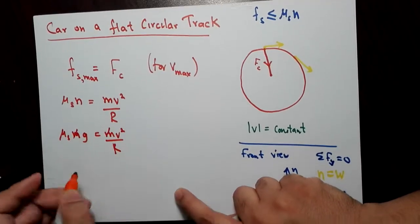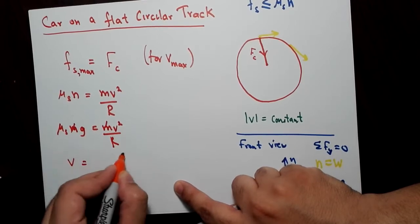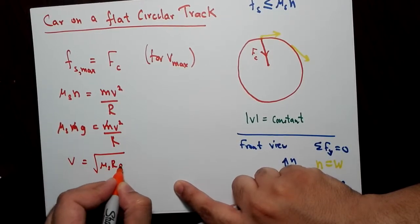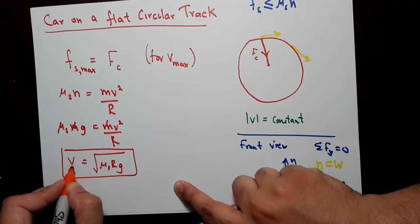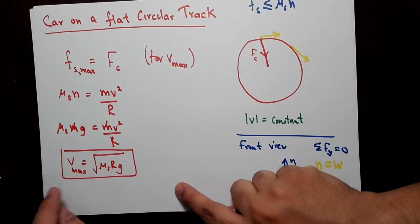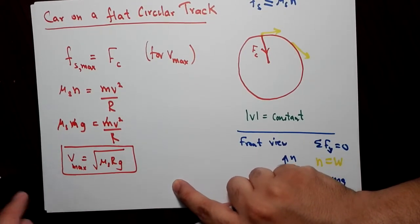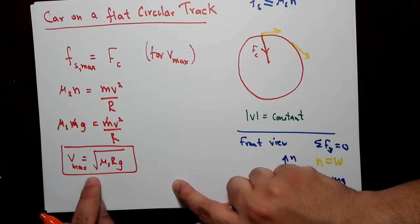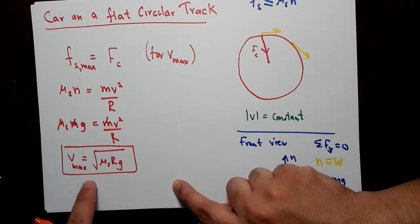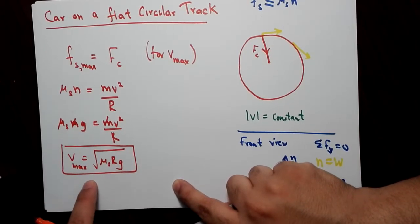The mass cancels out, so you get V² equals μs times R times g, V equals square root of μs times R times g. So that's your maximum speed of the car. If the car goes around the circular track with a speed greater than this, the car will slip out of the track.